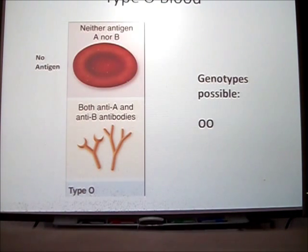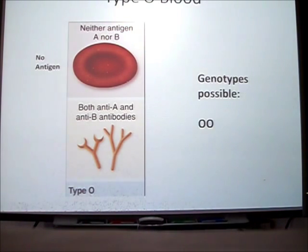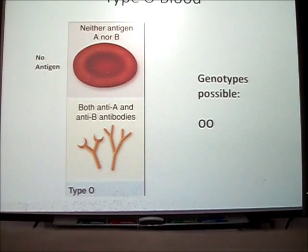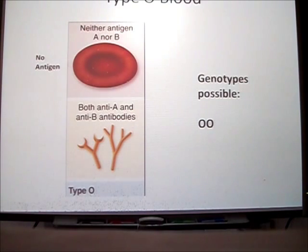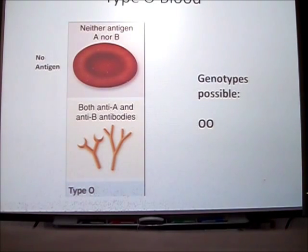If you have O blood, you have no proteins or no antigens on your red blood cells. Because you have no proteins, your body does not want blood cells with proteins, so you have both antibodies — A and B — in the plasma. O is a recessive allele, so the only genotype possible is homozygous recessive, or two O's.